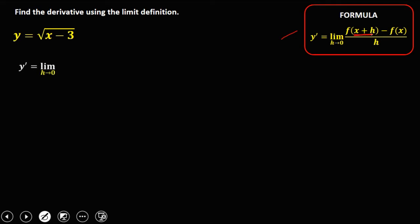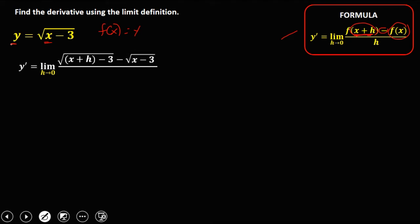So we have y prime equals the limit as h approaches 0. Substitute x plus h for x. For the first term, we have the square root of x plus h, then minus 3. Then minus the second term, which is f of x. Since f of x equals y and y is the given, the second term is the square root of x minus 3. Then over h.